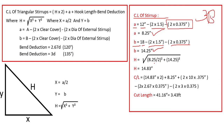To find h using Pythagoras theorem: x = a/2 = 8.25/2, squared, plus y = b = 14.25, squared, all under root. So h = 14.83 inch.